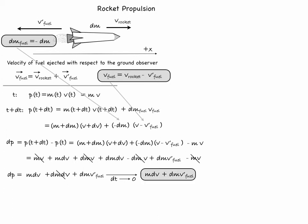We'll highlight this expression so we can actually write down Newton's second law. The net external force must be equal to the rate at which the momentum changes over time. Or using the highlighted expression that will be equal to m dv/dt plus dm/dt times v'_fuel.